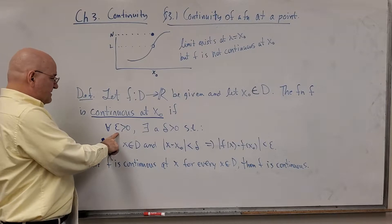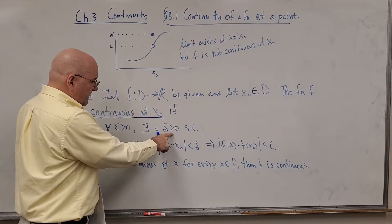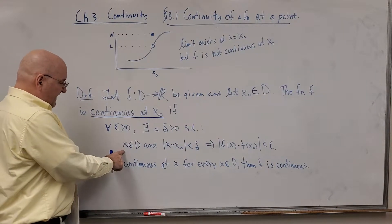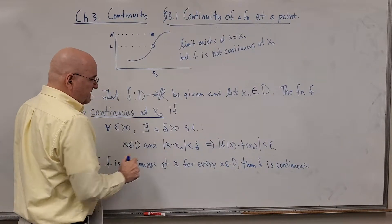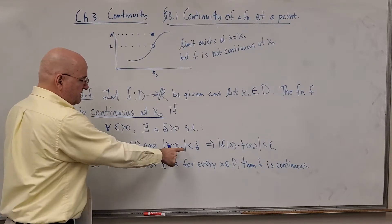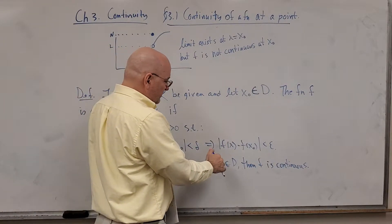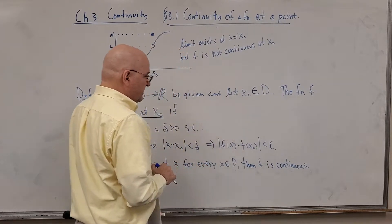If for every epsilon greater than zero, you can find a delta greater than zero such that the following is true. If X is in the domain and X is very close to X naught within a distance of delta, that means that the height of the functions are going to be very close. F of X minus F of X naught is going to be less than epsilon.